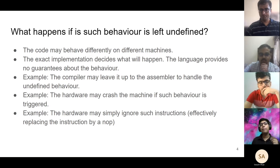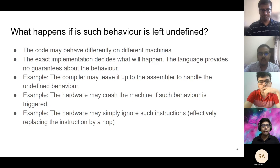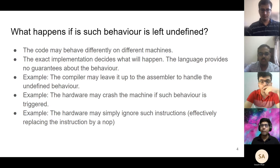What happens if we leave behavior undefined? The code will behave differently on different machines because the language does not guarantee how the code is going to behave. The compiler may leave it up to the assembler, which may leave it up to the hardware. The hardware might cause a crash or an exception, or it might simply ignore the illegal instruction. If the code runs a certain way on my machine, it might run very differently on yours.